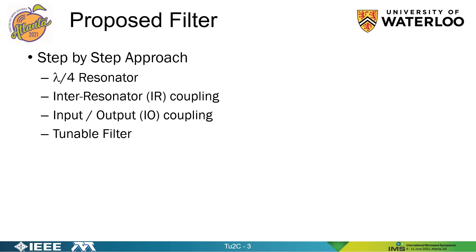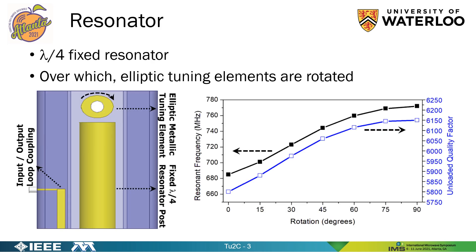We employed a step-by-step approach. We first explored the design of a tunable resonator, followed by the design of the inter-resonator coupling structure and the design of the input-output coupling structure. The tunable resonator uses a fixed lambda-by-4 resonator post over which an elliptic tuning element is rotated. As the tuning element is rotated, the air gap changes and hence tunes the resonator.